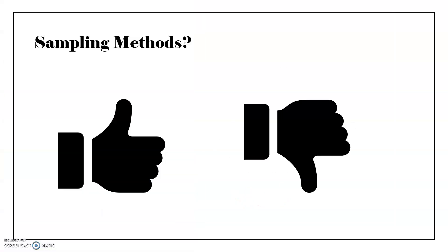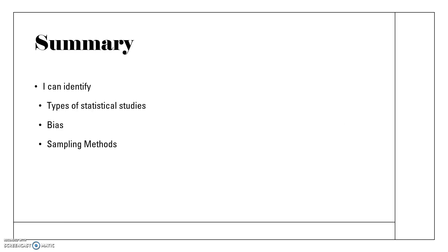Think about how you feel about sampling methods. There were six of them, so make sure you understand all six. In summary for this lesson, you should be able to identify the types of statistical studies, bias and how bias is introduced, and the sampling methods. See you tomorrow.